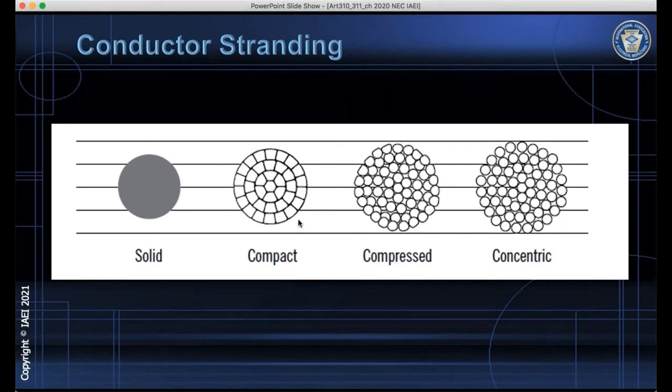If additional dies are used, there are compact stranded conductors that are used for 600 volt aluminum building wire, or they could be used for medium voltage copper or aluminum conductors.